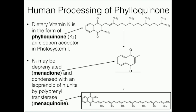However, some cells may wish to process phyloquinone into another form — menaquinone. Both of these forms are usable. The difference between menaquinones and phyloquinones is that phyloquinones are defined by having a specific tail, while menaquinones can have repeating isoprenoid units of varying chain lengths. Phyloquinone is deprenylated — its polyprenyl tail is removed — to form an intermediate called menadione, which has no vitamin K activity. Menadione is then polyprenylated by a polyprenyl transferase to form menaquinone. Both phyloquinone and menaquinone have vitamin K activity.